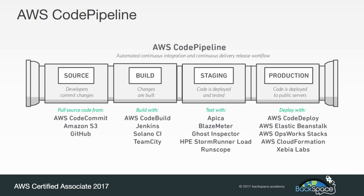The pipeline will pull source code from the Git repository, and then if a build process is required, it will build the application and also test it. Once it passes unit testing, it will then be deployed to our production environment, which is created and managed using AWS Elastic Beanstalk, and that will deploy our code when it receives requests from the CodePipeline service.